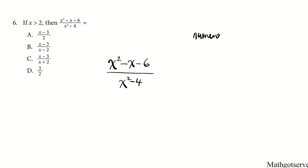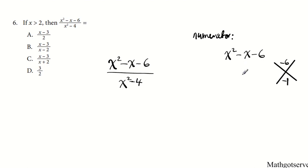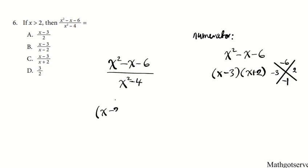The numerator is x squared minus x minus 6. This is a quadratic trinomial, so I'm going to factor this using the AC method — the x-game. AC goes on top and B on the bottom. AC is negative 6 and B is negative 1. What two numbers multiply to give negative 6 and add to give negative 1? We can use 3 and 2. Since we need the sum to be negative, the bigger number has to be negative. So the factored form is (x minus 3) times (x plus 2).